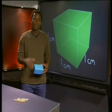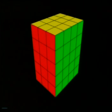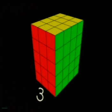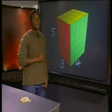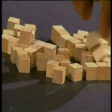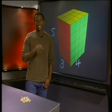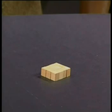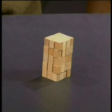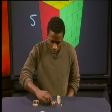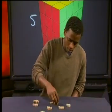Now look at this diagram of a right rectangular prism. It is built from unit cubes. One edge of this structure has a length of 3 unit cubes, another edge is 4 unit cubes long, and the third edge is 5 unit cubes long. If I construct the same prism with these unit blocks, can you count the number of units it contains? It's easier to count each of these single blocks than to do it from a picture. I think it's got 60 unit cubes, so its volume would be 60 cubic centimeters.